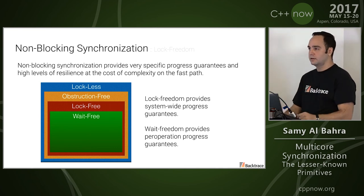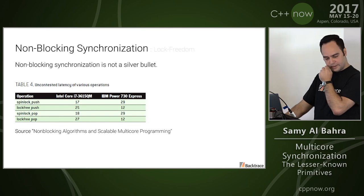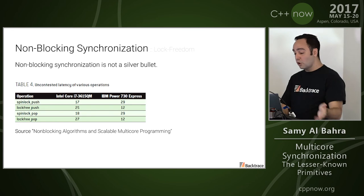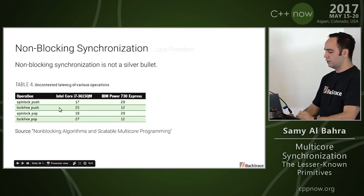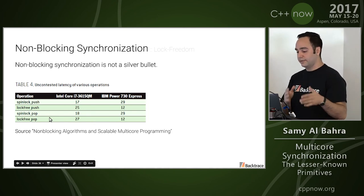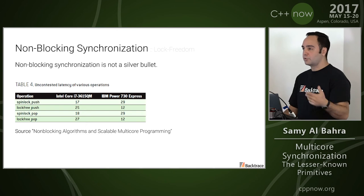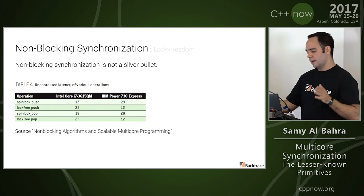There's a lot of hype around lock freedom, but number one — it's not a silver bullet. It does not mean things will be faster; in many cases it means things will be slower on the fast path. At least on x86, you have to use more expensive atomic operations on the fast path, plus memory barriers, and you don't have the ability to amortize things. In many cases, the cost of complexity on the fast path will outweigh the benefits until you have high levels of contention — that's where things really shine. Here, uncontested performance shows a spin lock-based stack has a significantly better fast path compared to the lock-free stack.